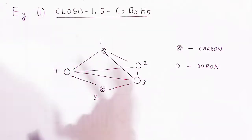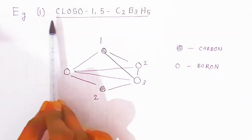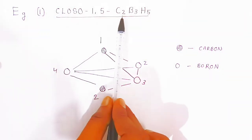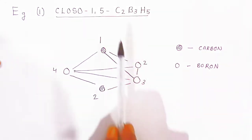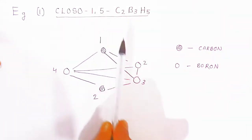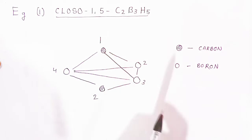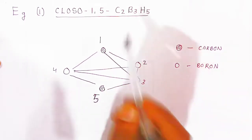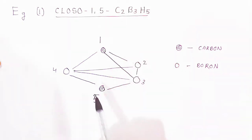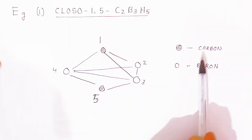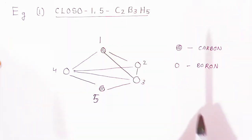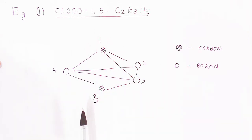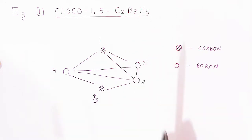Now we are going to see examples. The first example is Closo 1,5-C2B3H5. Here '1,5' refers to the positions of the carbon atoms — position 1 and position 5 are the carbon atoms, while positions 2, 3, and 4 are the boron atoms. This is the possible structure of Closo 1,5-C2B3H5.